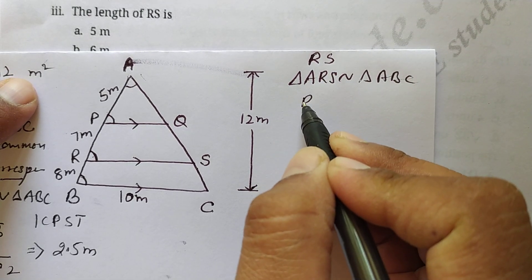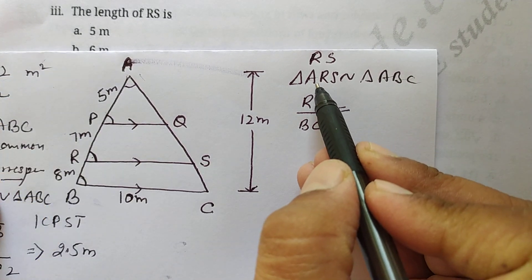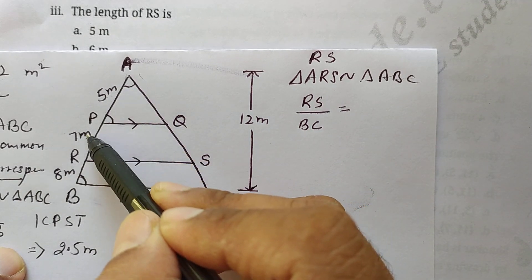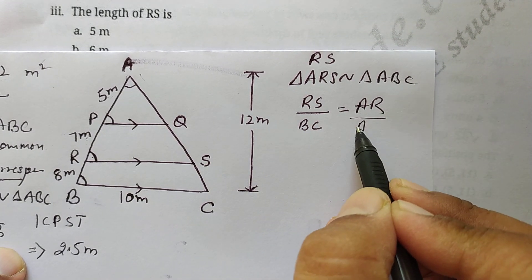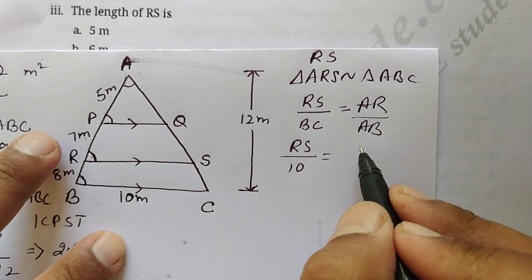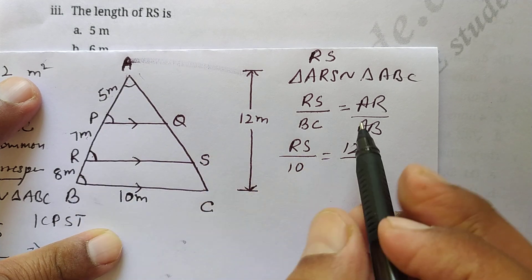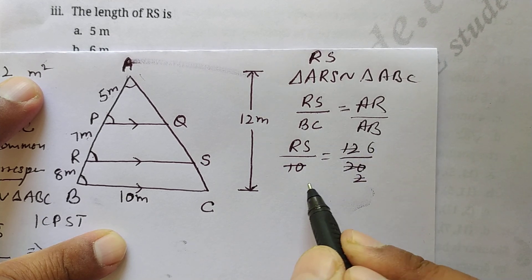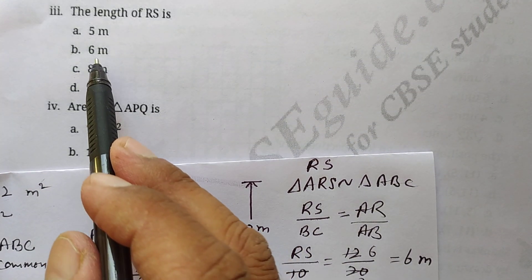Taking the ratio: RS over BC equals AR over AB. RS we need to find, BC is 10, AR is 5 plus 7 equals 12, and AB is 20. So RS over 10 equals 12 over 20. Cancelling gives RS equals 6 meters. So option B is correct: RS is 6 meters.